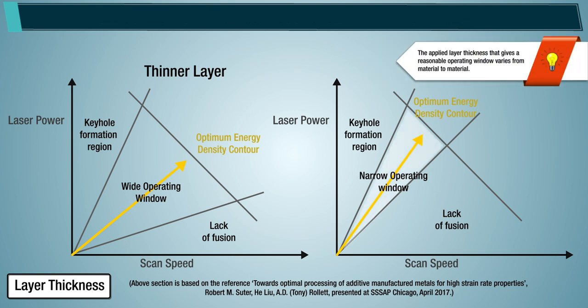Note: the applied layer thickness that gives a reasonable operating window varies from material to material. It is normally in the range of 20 to 90 microns, for the laser spot diameters of 70 to 100 microns.